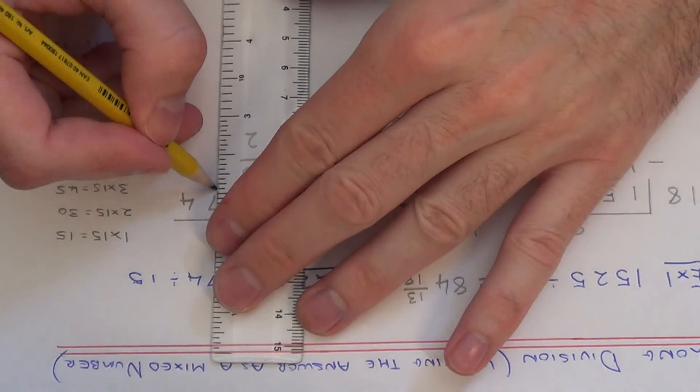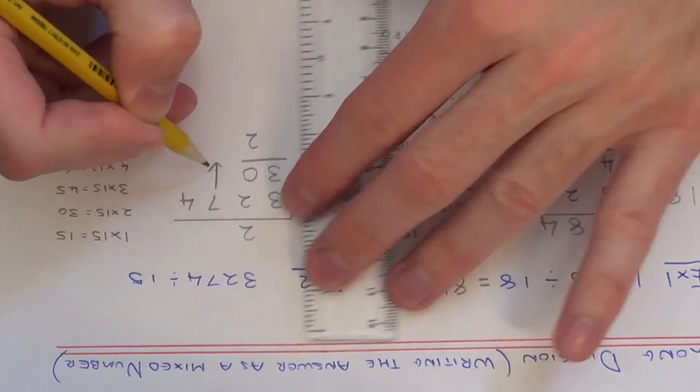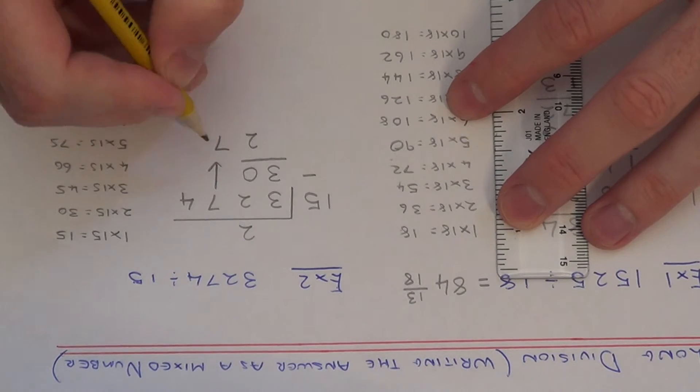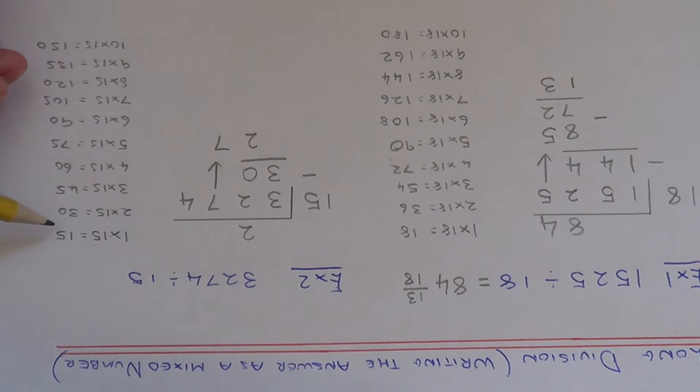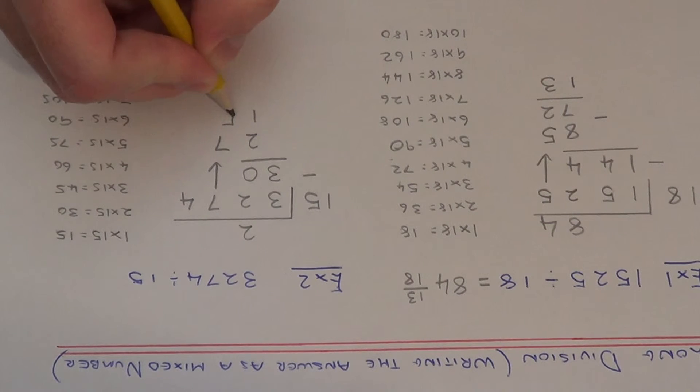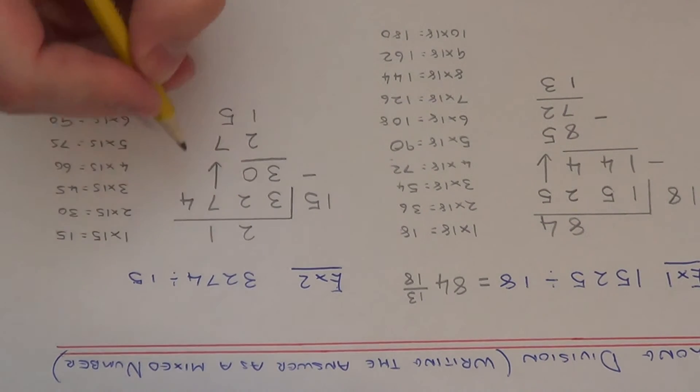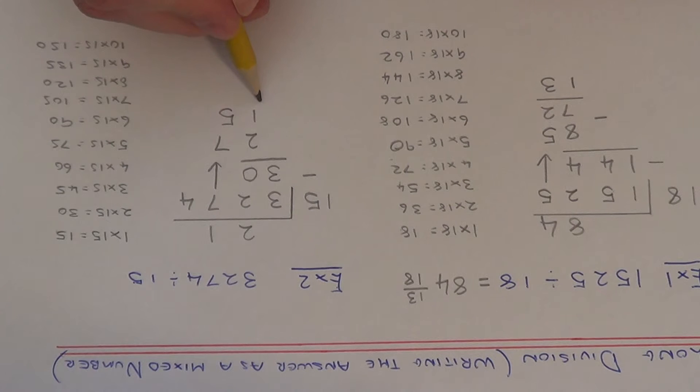Next bring down the 7 to make 27. We now need to work out 27 divided by 15. Let's have a look for our best multiple. We've got 15, 30. 30 is too big, so we need to stop on the 15. So that's a nice easy one. If we write the 15 underneath the 27 and put the 1 at the top. Again we need to take these two away. 27 take away 15 leaves us with 12.